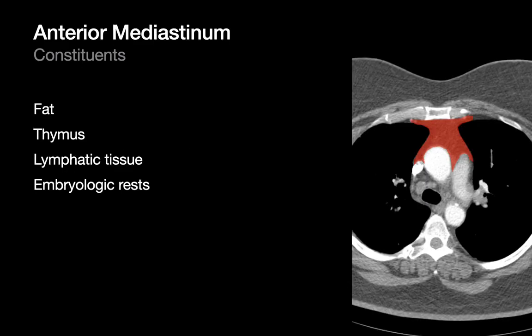A good start in terms of creating a list of anterior mediastinal masses is to think about all the different constituents of the anterior mediastinum and what might arise if something goes wrong with one of these constituents. There's a lot of fat in the anterior mediastinum, some thymus, a little bit of lymphatic tissue, and a few embryologic rests. Anything pathologic most likely starts from one of these four entities.